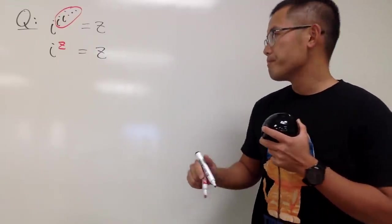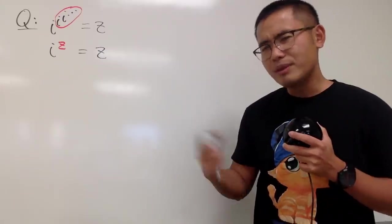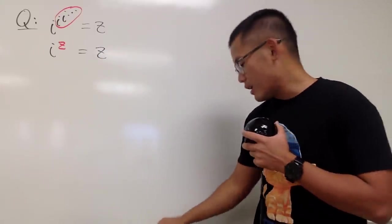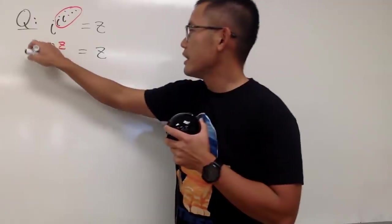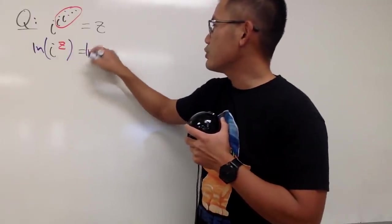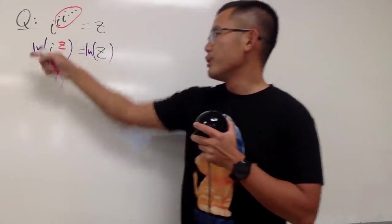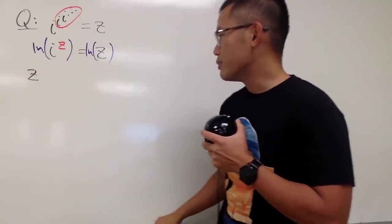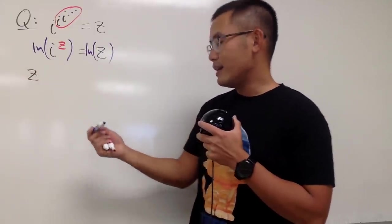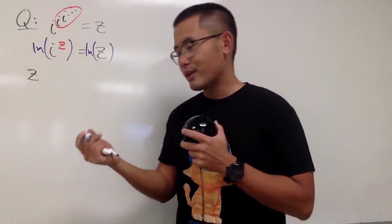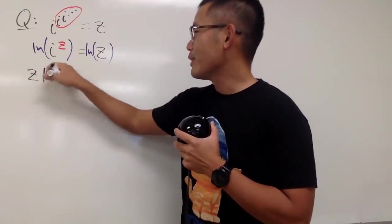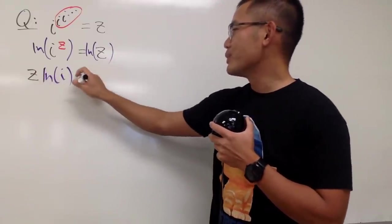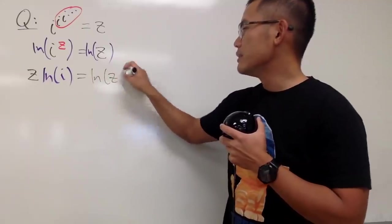Now let's take the natural log on both sides, because I want to get the z's on one side. We use the purple pen. Take the natural log here and take the natural log here. We can bring the z to the front, so we have z times the natural log of i, and this is equal to ln z.